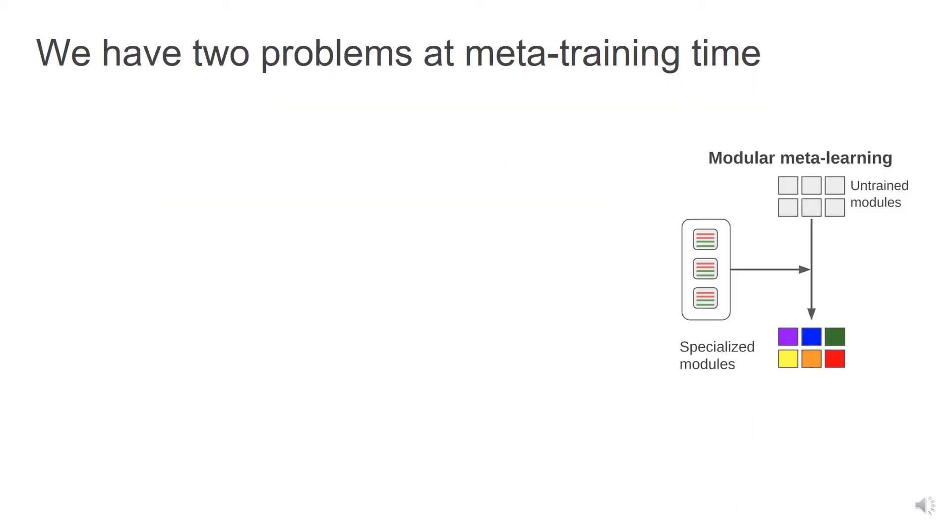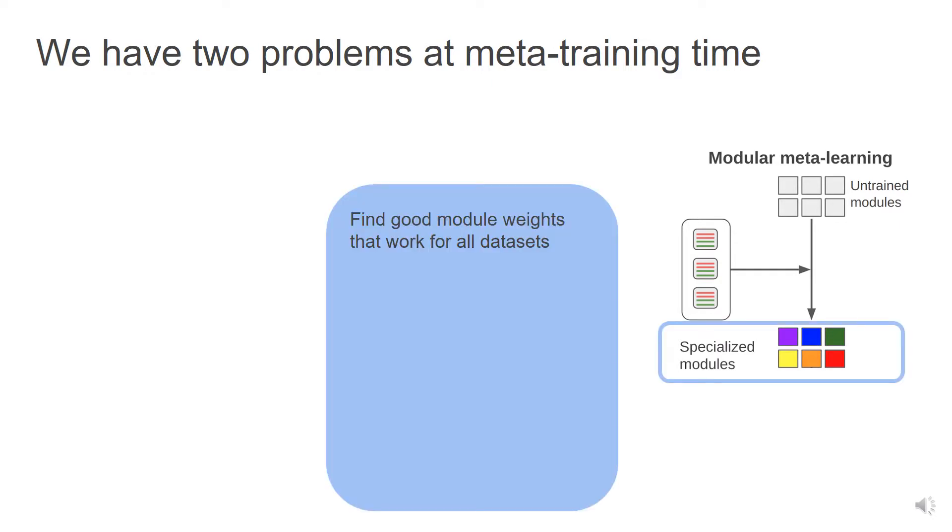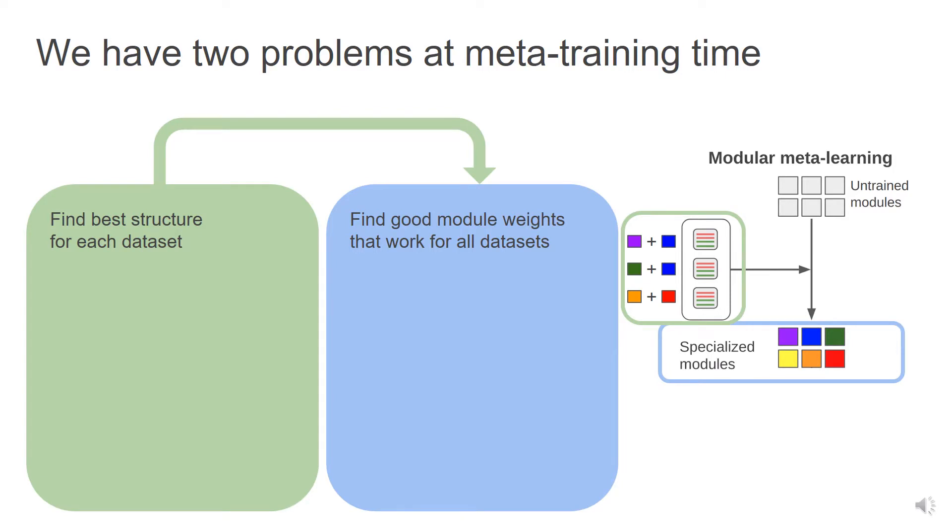At meta-training time, we want to learn composable modules. For this, we need to find good module weights. However, we cannot train the modules without knowing the structure for each dataset. Similarly, we cannot find a good structure without good modules. This leads to a chicken and egg problem. Moreover, one requires combinatorial optimization, while the other involves differentiable optimization.